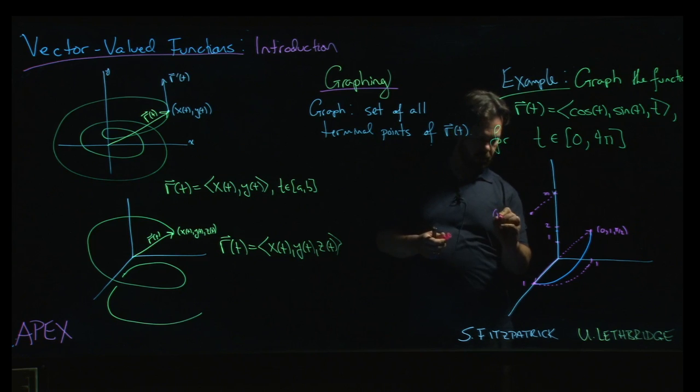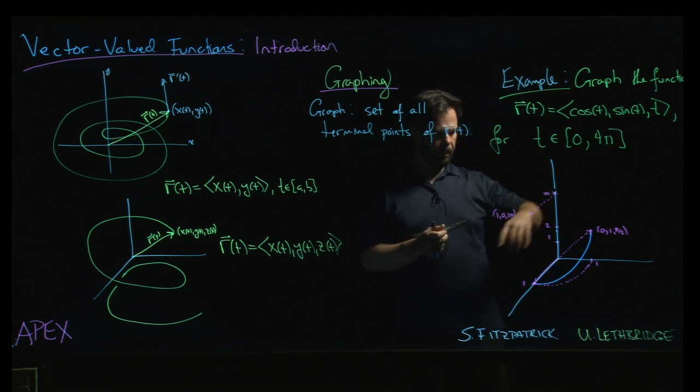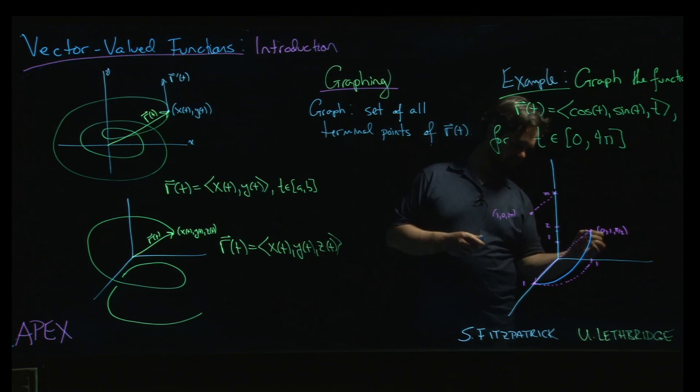So we're going to be at one, zero, and two pi. So we've got once around the circle, but we've also gone up, right? So what we get is this sort of spiral shape.